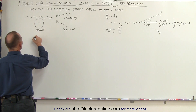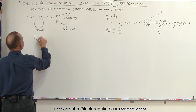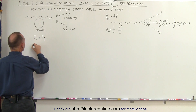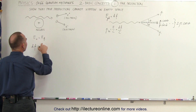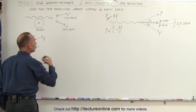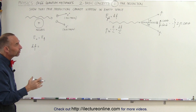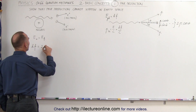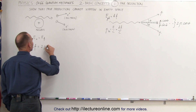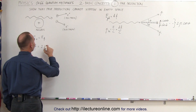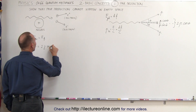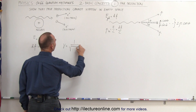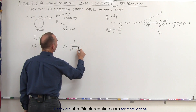So if energy is conserved — energy initial equals energy final — we can say that energy initial is equal to h times the frequency of the photon, and energy final must be 2 times the relativistic mass of each particle times c squared. It's not going to be the rest mass, so we have to include the relativistic adjustment: 2 times gamma times m-naught times c squared, where gamma is equal to 1 over the square root of 1 minus v squared over c squared.